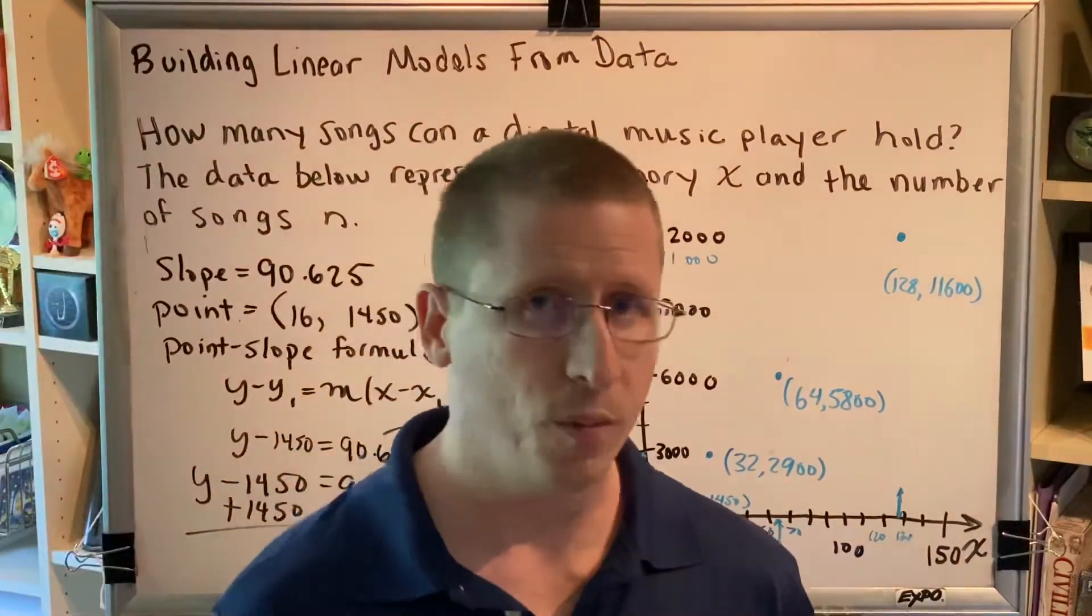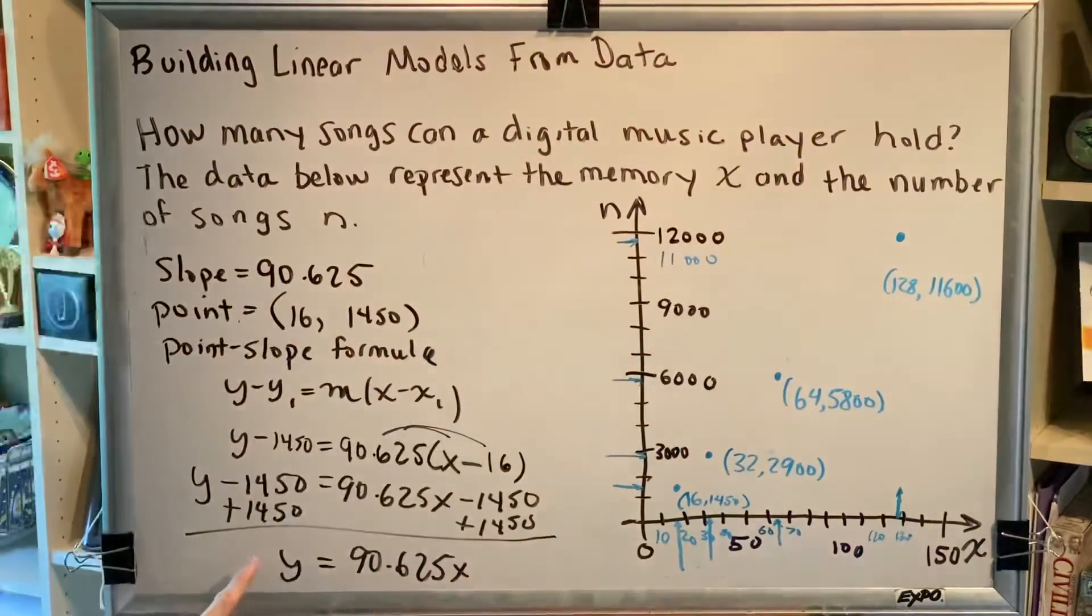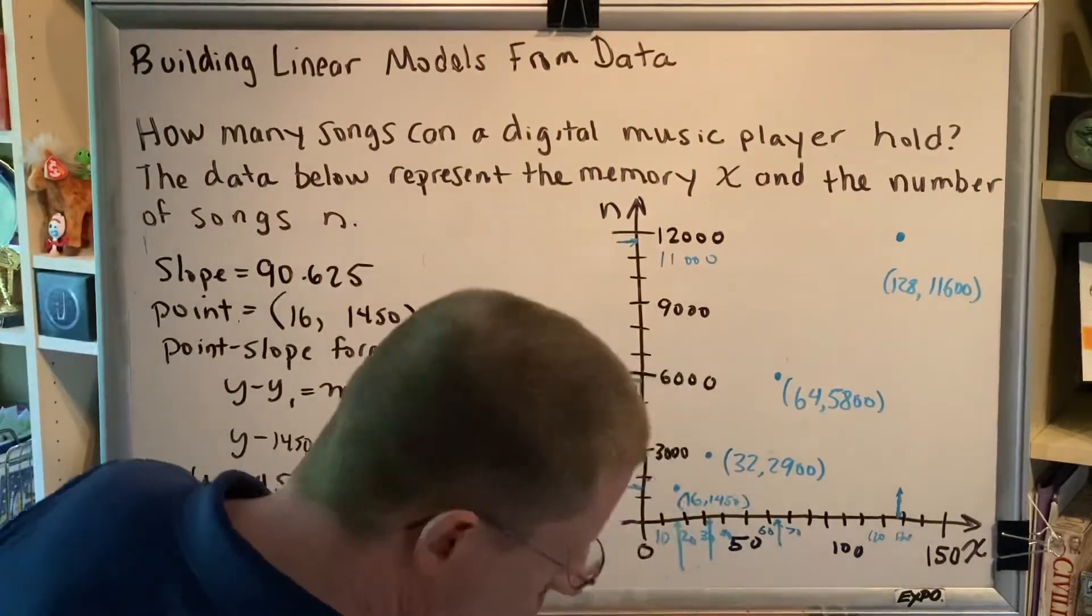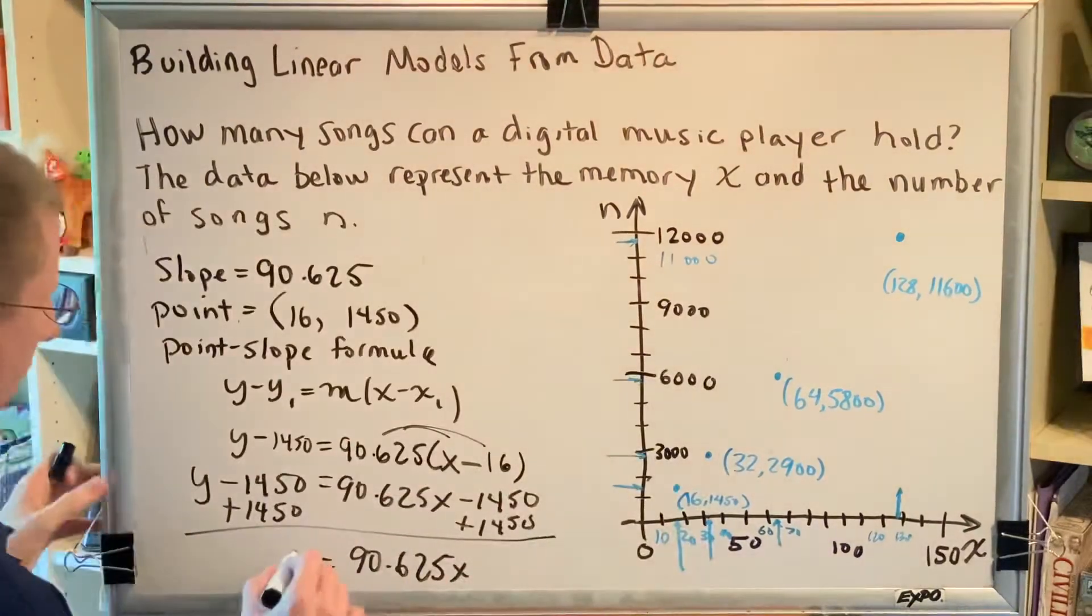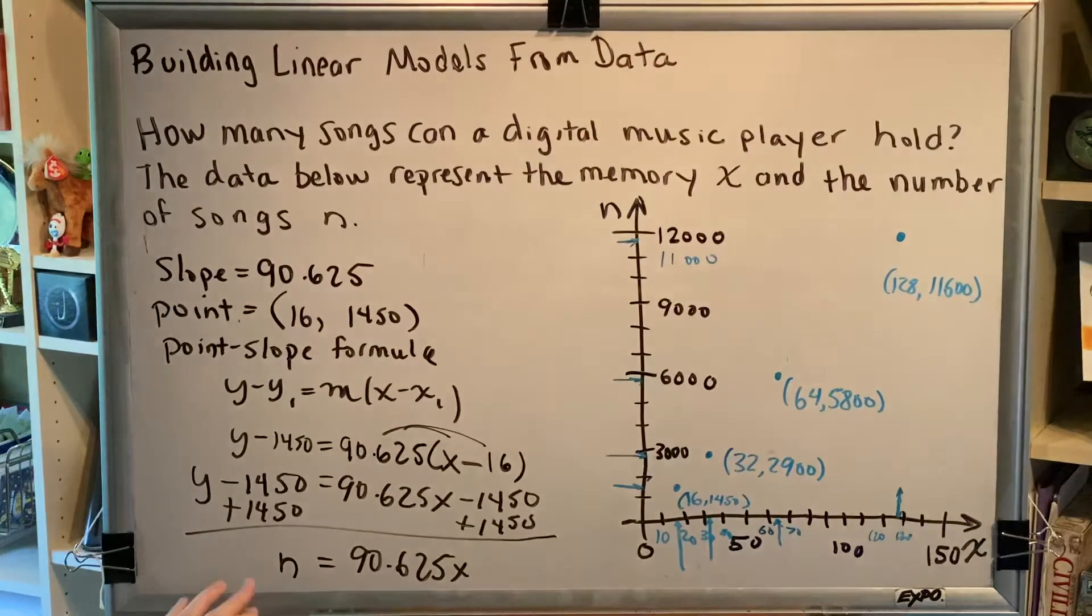Remember that our variables in this problem are not x and y, they're x and n. So really, everywhere I wrote a y, all throughout my solution method here, I really should have been writing an n, because this is telling me what n equals. And the last thing I'd say before we move on to part d is, what does this mean and how is this useful to us?